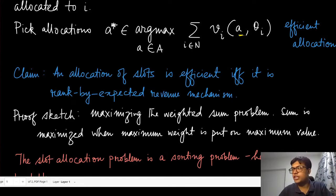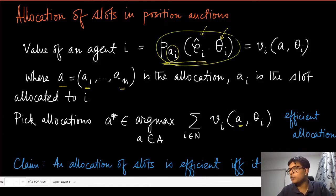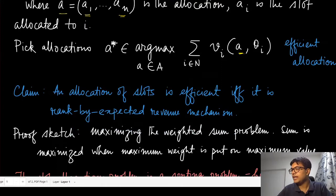We have already seen the expected revenue. Expected revenue is this total quantity - this is the probability of getting a click, and whenever that click happens, this agent gives this value. If you are sorting them with respect to that expected revenue, you get an efficient allocation. The proof is fairly simple.